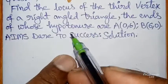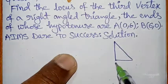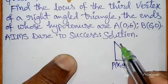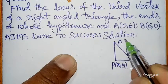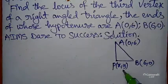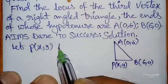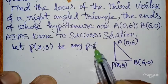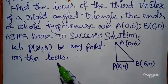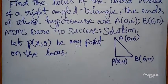For a right angle triangle, let P be the third vertex. The ends of the hypotenuse are A(0, 6) and B(6, 0). Let P(x, y) be any point on the locus. This is the standard assuming value used for every problem in the locus chapter.